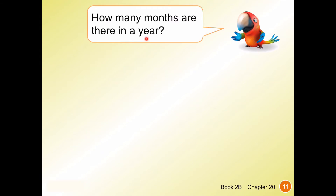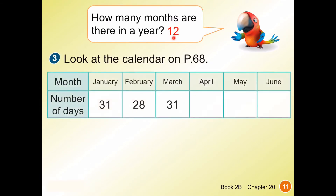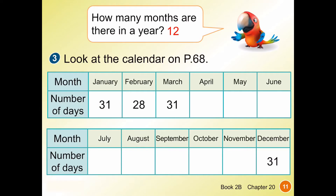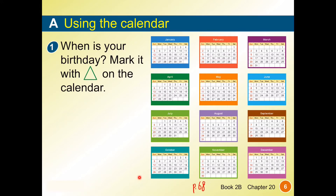Turn to the next page, page 69. How many months are there in a year? There are 12 months in a year. For question three, we have to refer back to the calendar on page 68, because you're asked to write down the number of days for the 12 months. For January, the last day is the 31st, so January has 31 days. February has 28 days, March has 31 days, and so on.